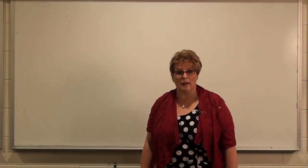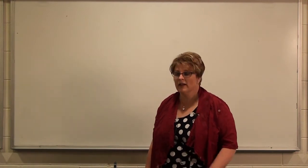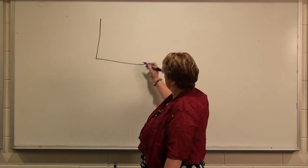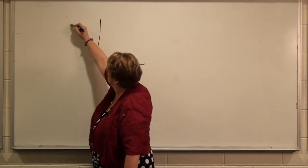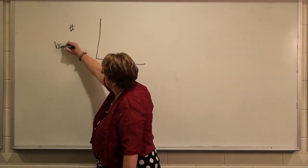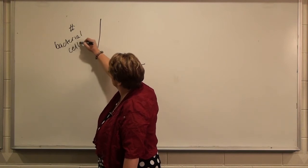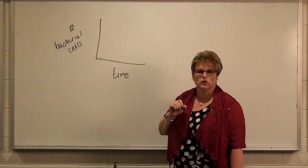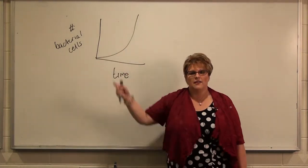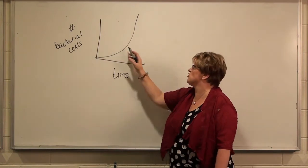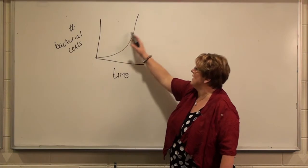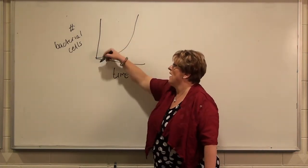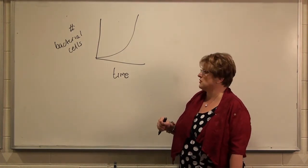Another example where logarithms are used in biology is in graphing. Things like microbial growth follow a logarithmic pattern because they grow in an exponential way. If we graph this with time on the x-axis and number of bacterial cells on the y-axis, this graph is hard for scientists to extrapolate data from. Most scientists like to work with a linear relationship between time and the dependent variable, which is bacterial cells.